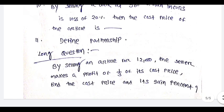Define partnership. If you have two or three, you have a question — you don't have to ask. But the long question is the problem. By selling an article for 12,000, the seller makes a profit of one third of its cost price. Find the cost price and gain percentage.